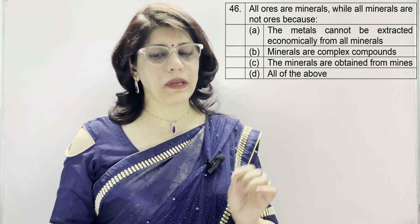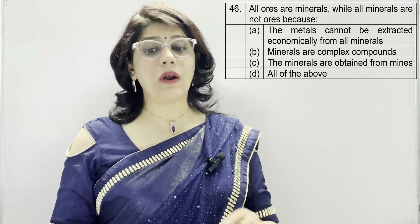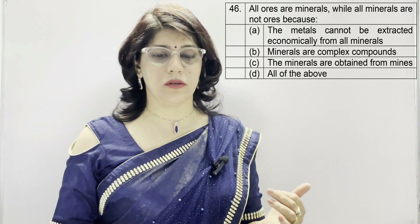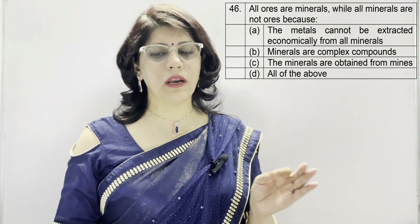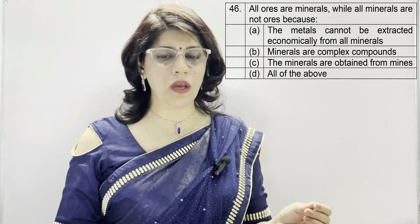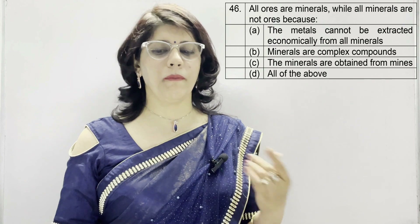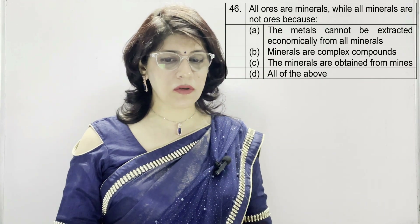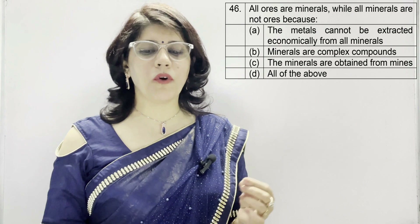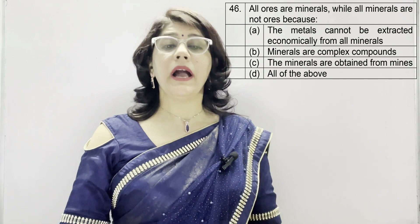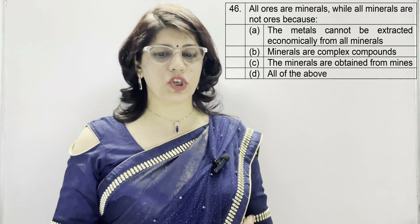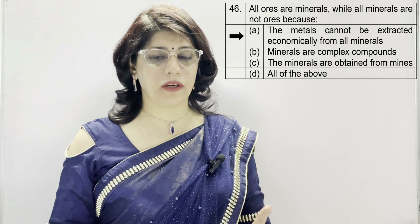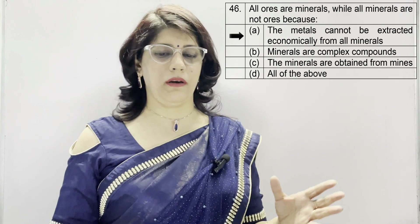Question number 46: all ores are minerals, while all minerals are not ores. Because — A: metals cannot be extracted economically from all minerals, B: minerals are complex compounds, C: minerals are obtained from mines, D: all of the above. The correct option is A — because the metals cannot be extracted economically from all minerals.